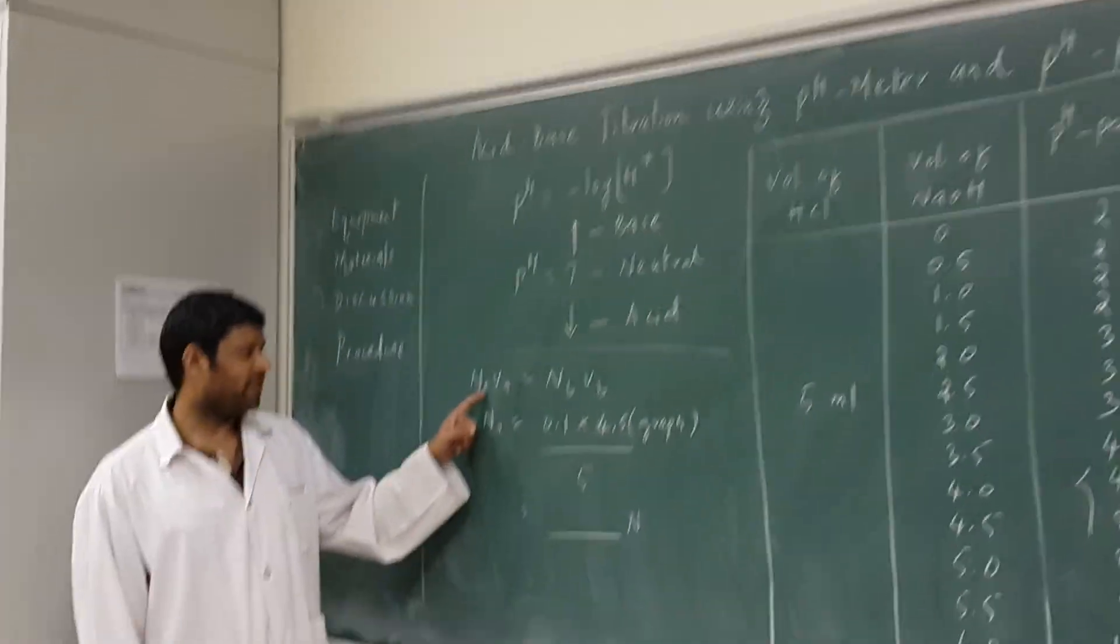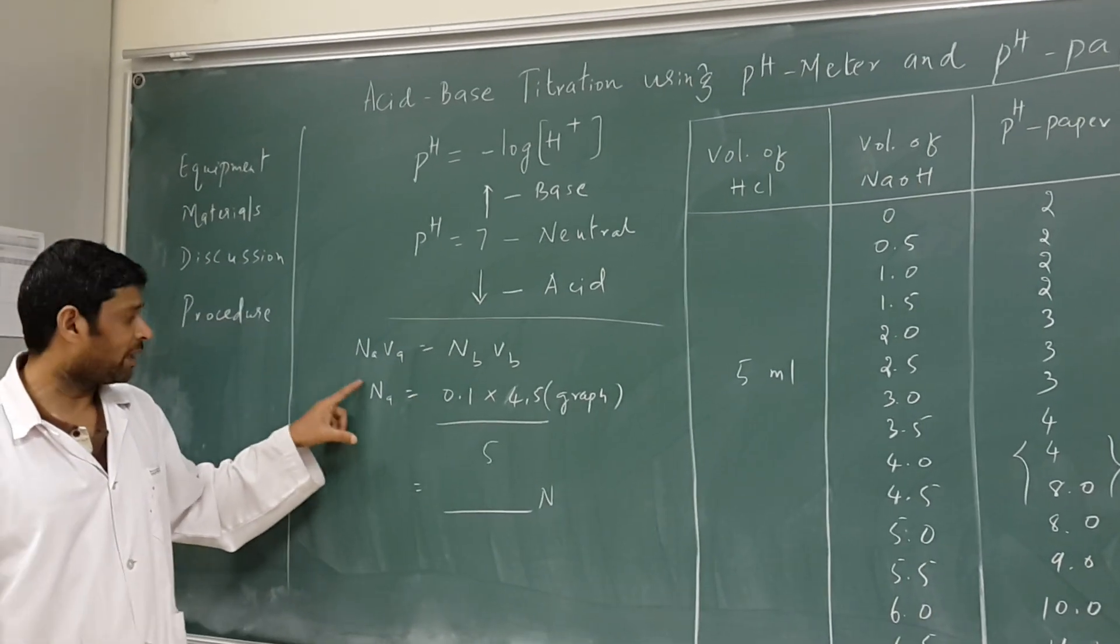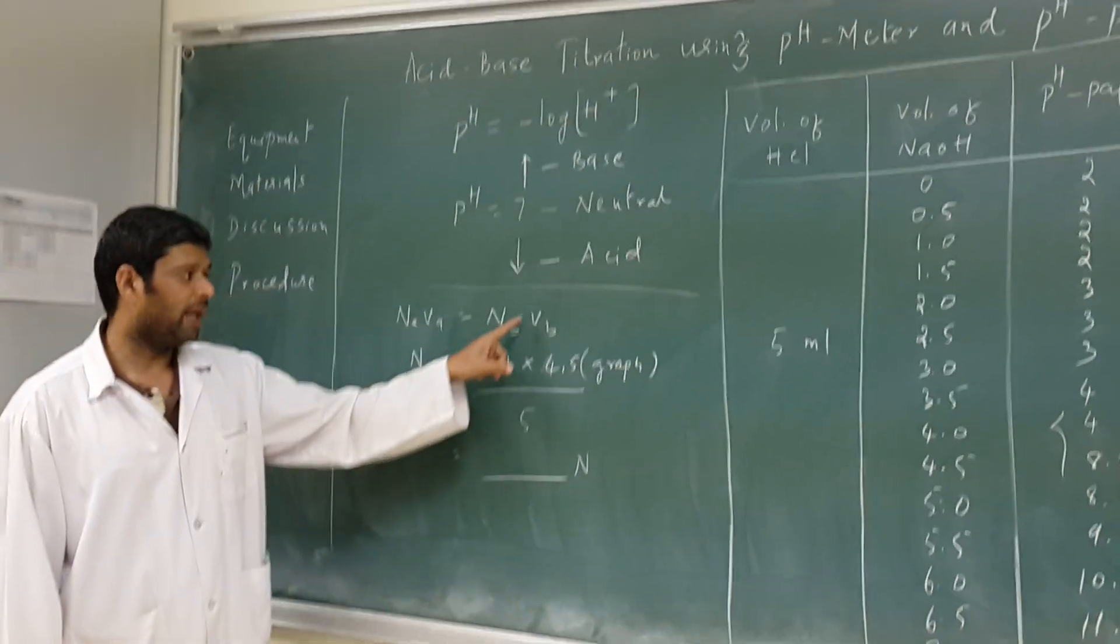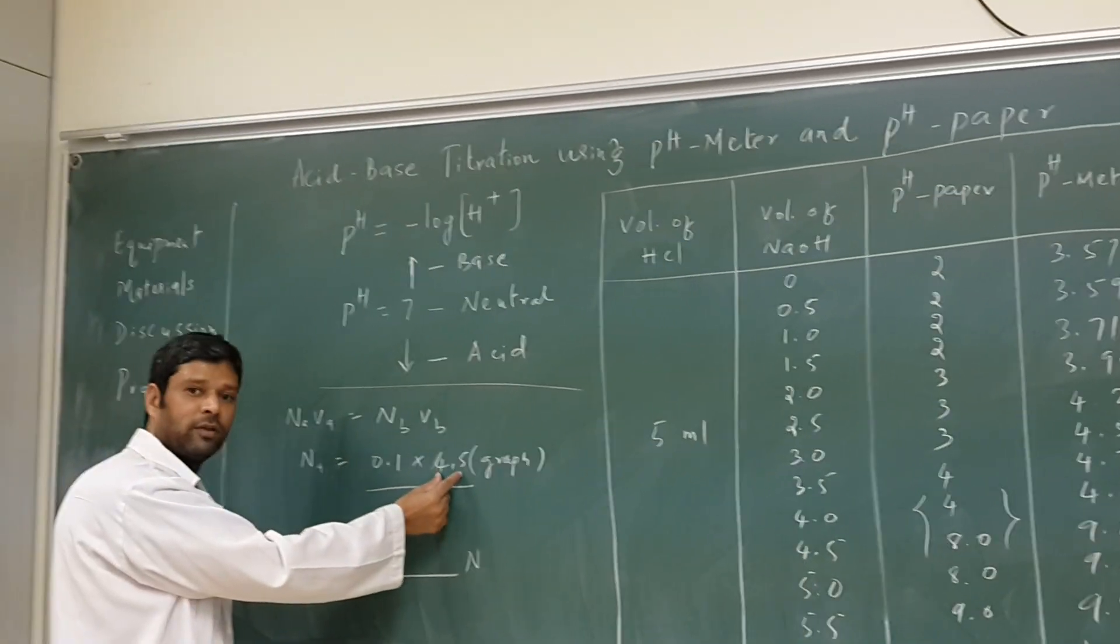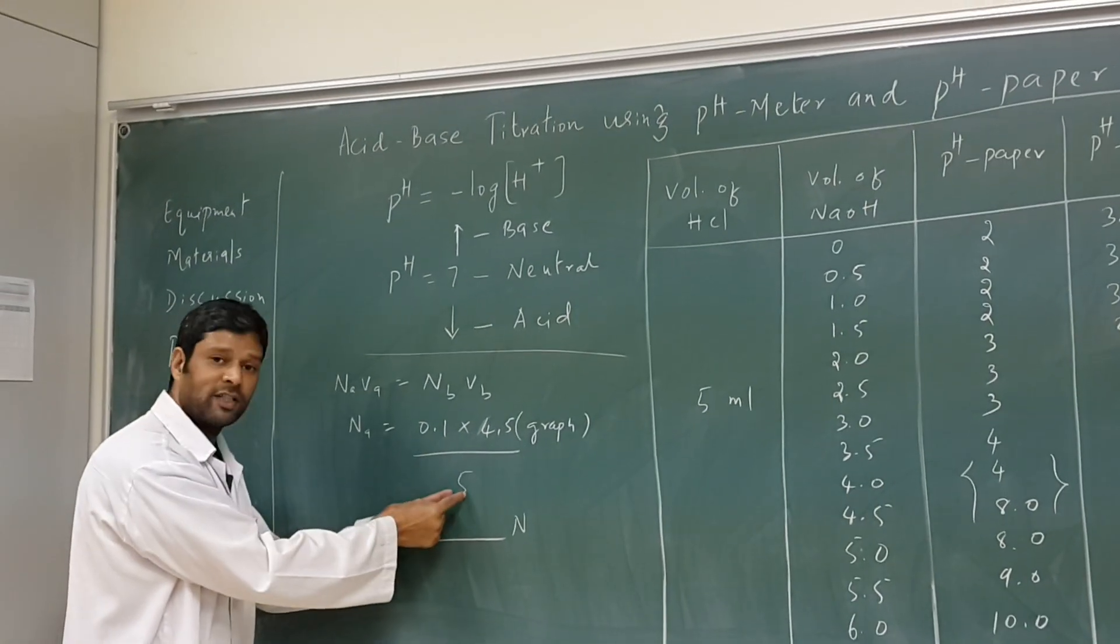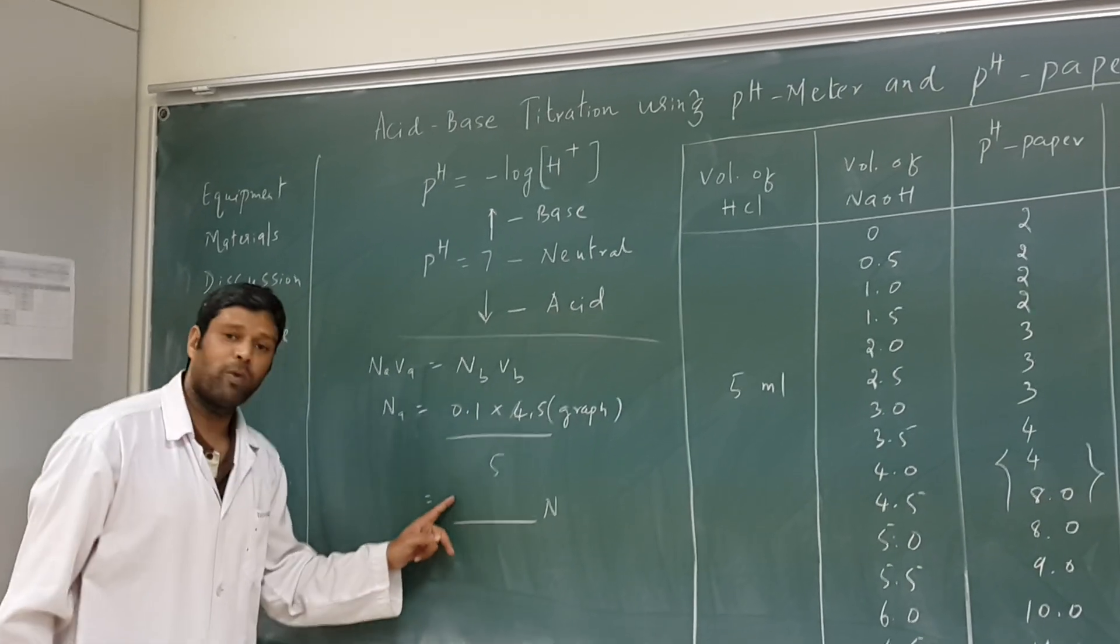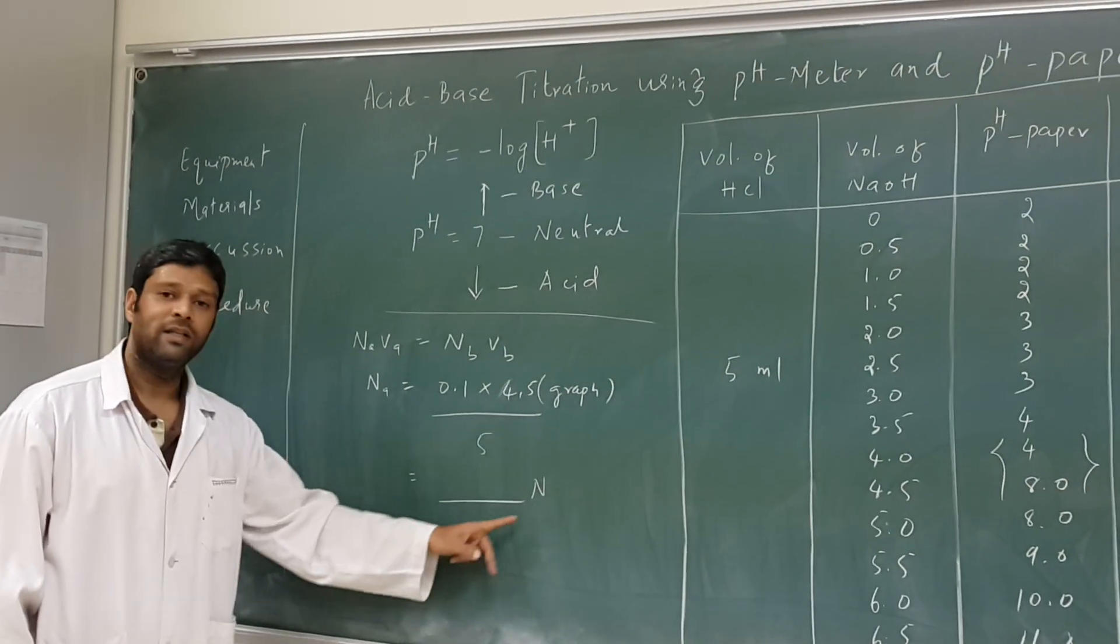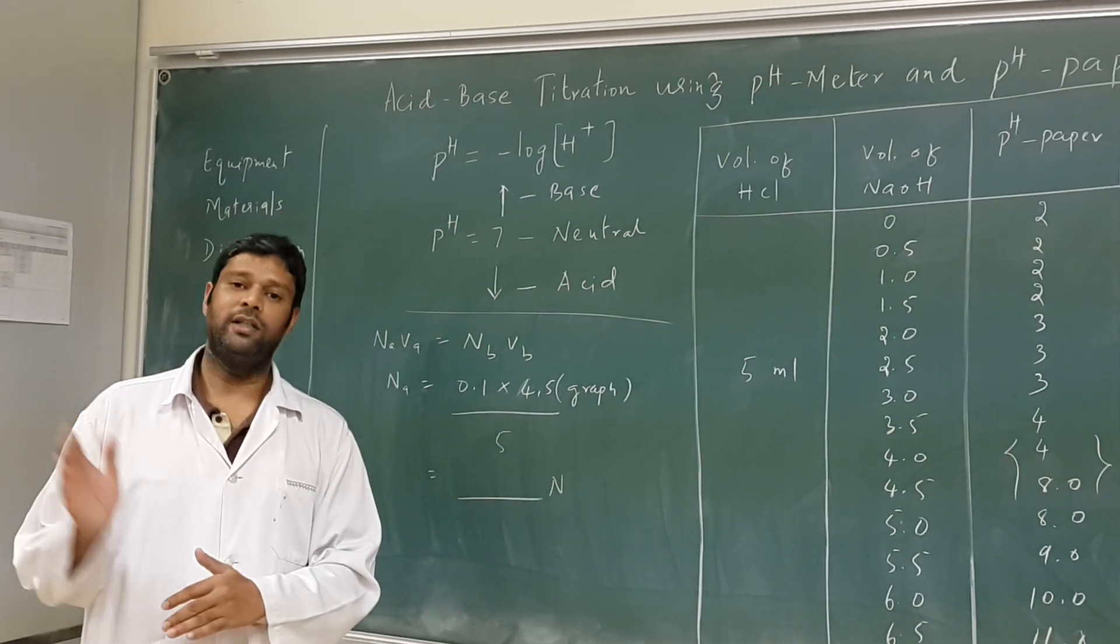You need to apply in the calculation. The calculation is: Na*Va = Nb*Vb, normality of acid times volume of acid equals normality of base times volume of base. You need to calculate normality of acid. Normality of base taken is 0.5, and volume of base is from the graph, pH paper as well as pH meter. The value is 4.5, and the volume of acid taken is 5. When you calculate this, you will get the normality, maybe 0.09 or 0.1. That is the final calculation. You need to produce this result either today or in the examination.